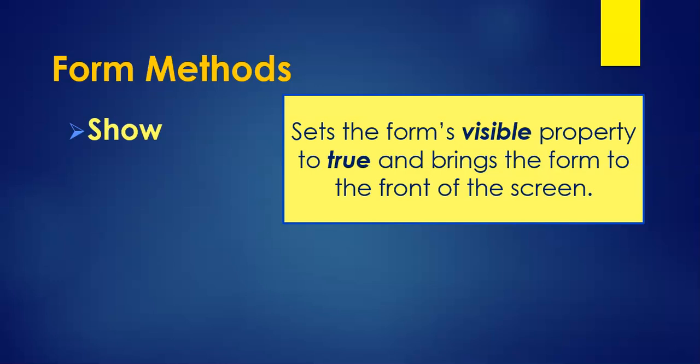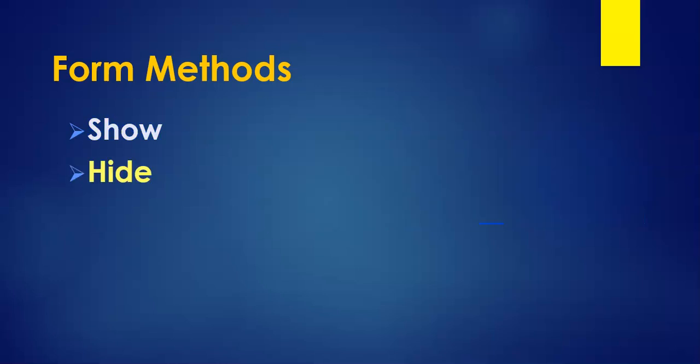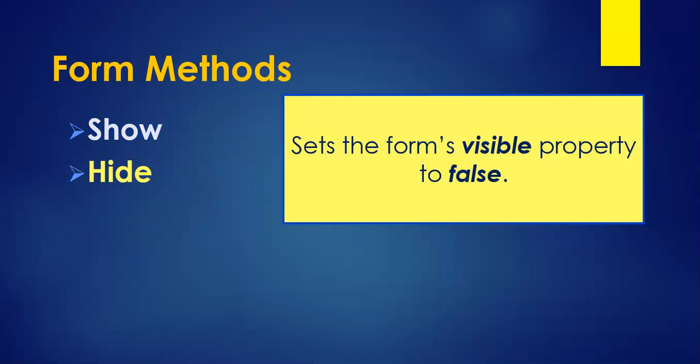If we want a form to disappear, we use the Hide property, which sets the visibility property of that form to false. The form is still technically running in the background, so we can still interact with it — it's just hidden and not in view.